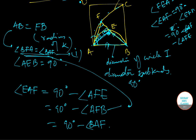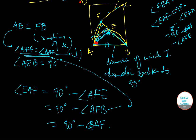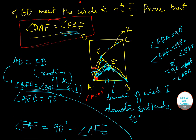Since ABCD is a square, angle at A is 90 degrees, so 90 degrees minus angle BAF equals angle DAF. Therefore angle EAF equals angle DAF, and we have successfully proved the required result.